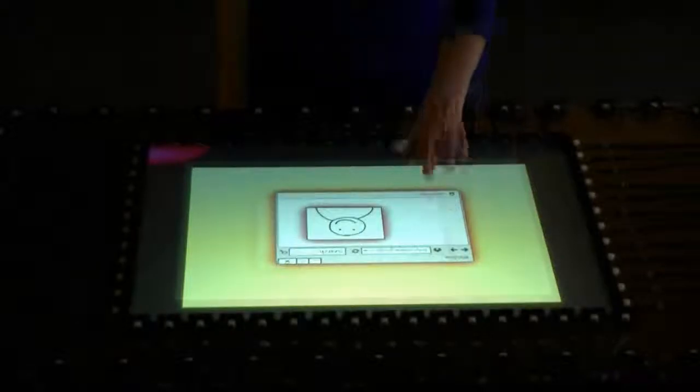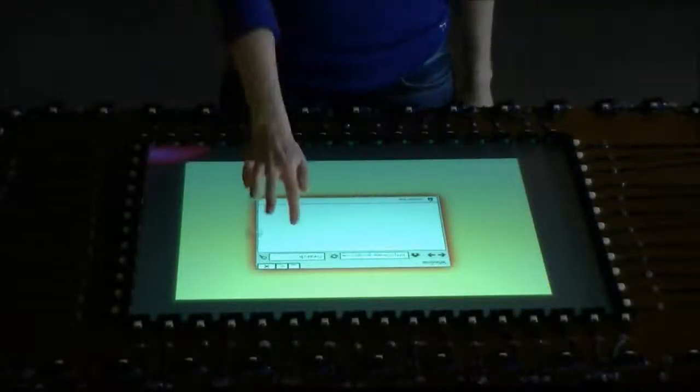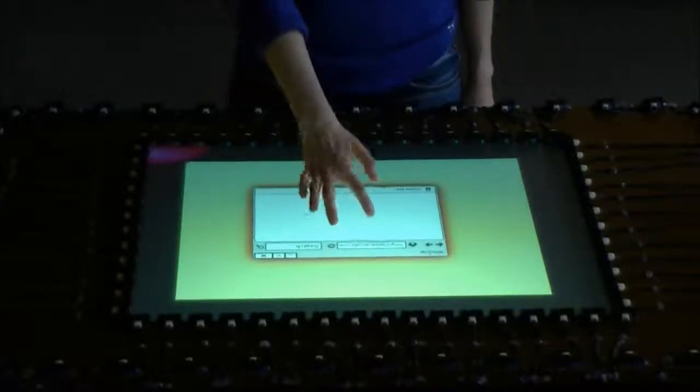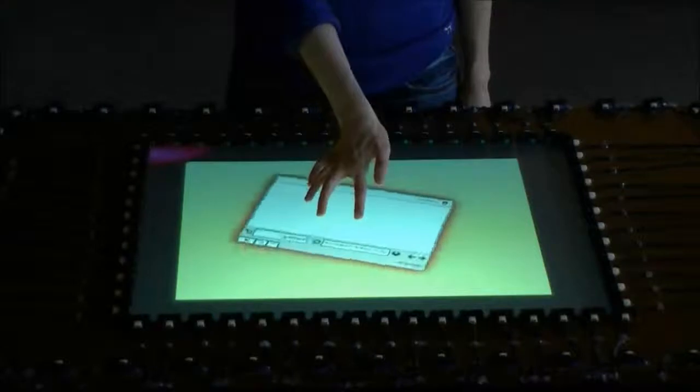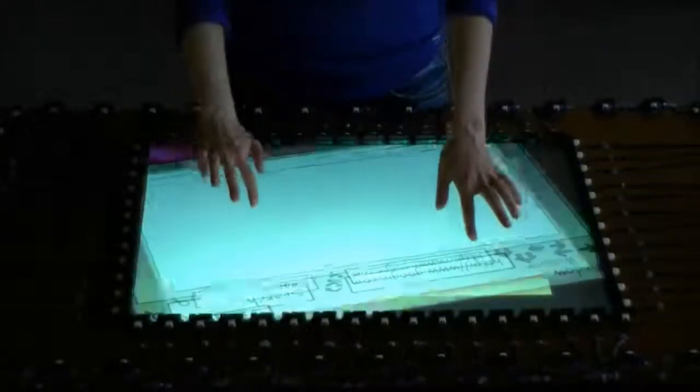To increase the precision of physical manipulations, ProxySketch differentiates manipulation transforms based on which hand is used. Here, when a user touches a component with one finger, they can move it. When the user touches the component using two fingers from the same hand, they can rotate it. If the user touches the component with one finger from each hand, they can scale the component.